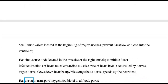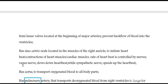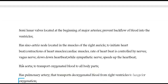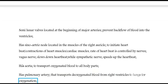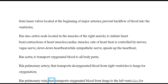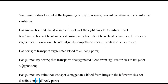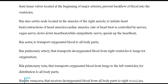The heart has the aorta to transport oxygenated blood to all body parts. It has the pulmonary artery that transports deoxygenated blood from the right ventricle to the lungs for oxygenation. It has the pulmonary vein that transports oxygenated blood from the lungs to the left ventricle for distribution to all body parts, and the vena cava that receives deoxygenated blood from all body parts to the right ventricle.